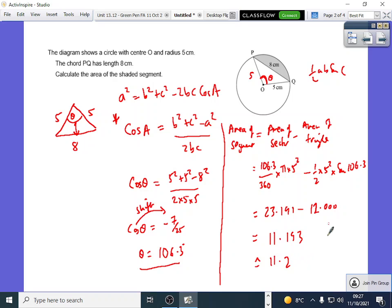You could round that to 3 significant figures, 11.2. Don't forget the units, it's a shaded region, so it's going to be centimeter squared.